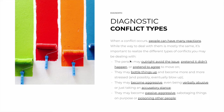One possibility is that the person may just outright avoid the issue, pretend that it didn't happen, or pretend to agree just to move on — false compliance. Another possibility is that the person may bottle things up and constantly become more and more stressed, and possibly, once they can't take it anymore, they eventually blow up in your face. Another possibility is that the person may become more aggressive, even being verbally abusive, or just taking an accusatory stance, being defensive. Or another possibility is that they may become passive-aggressive, sabotaging things on purpose to make their point without a direct confrontation, or even poisoning other people behind the scenes.